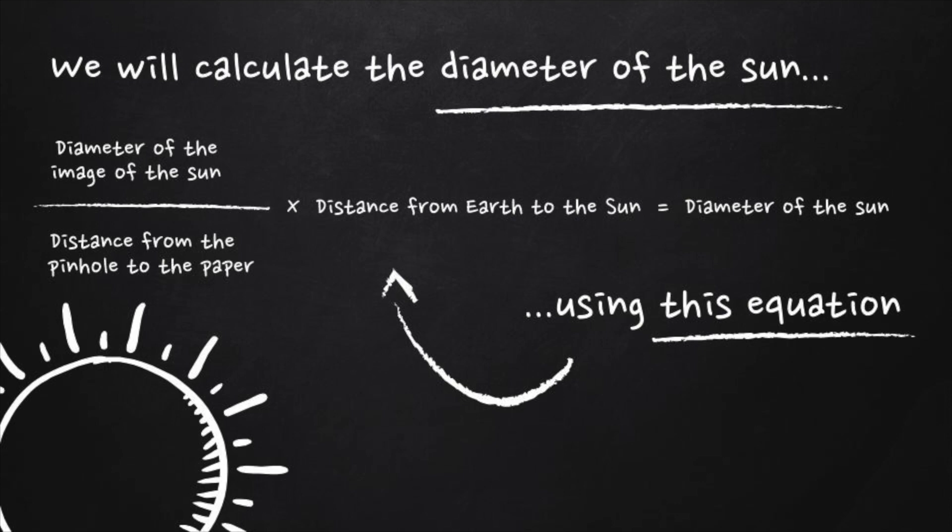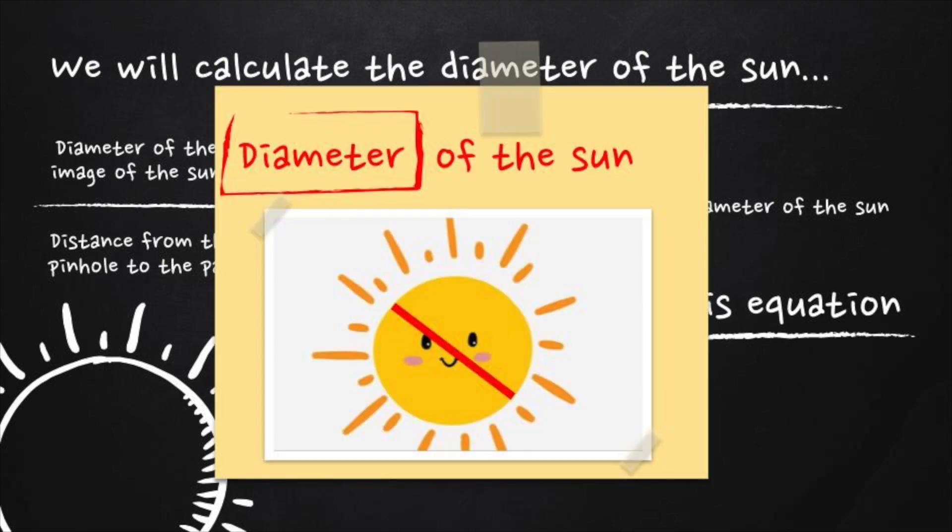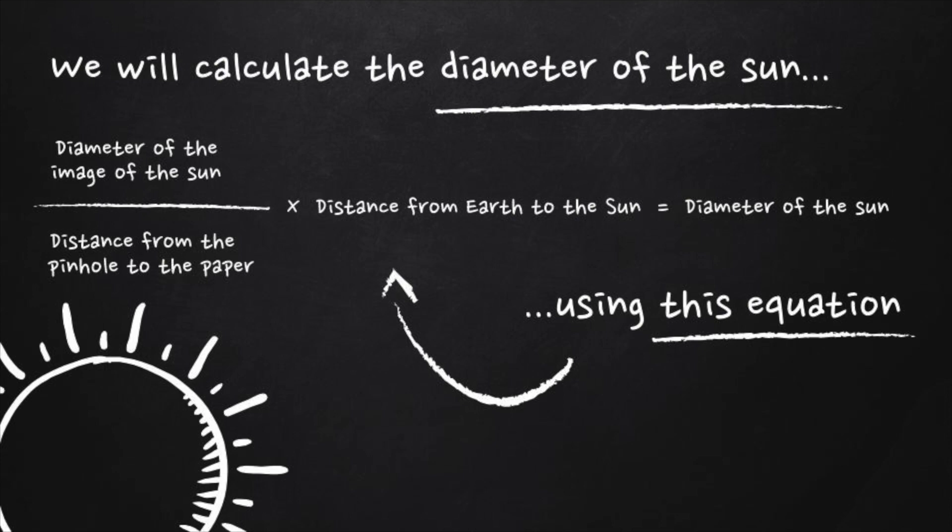We can use that relationship to calculate the diameter of the sun. Here is the equation we are going to use. Remember, the diameter is the distance across the circle through its center. The red line is the diameter of the sun. Back to our equation.